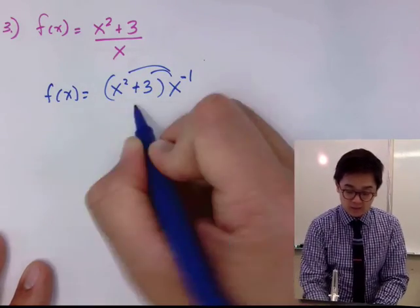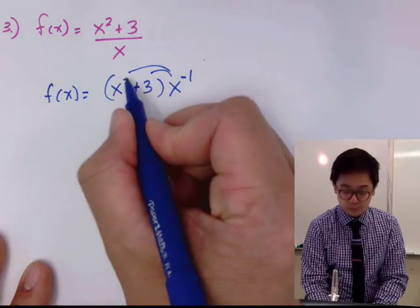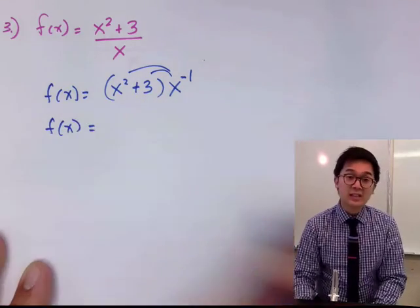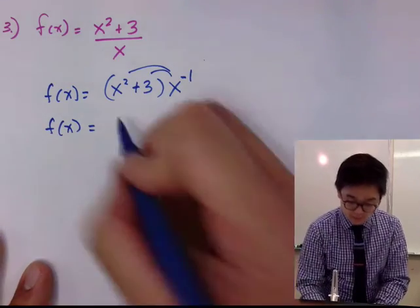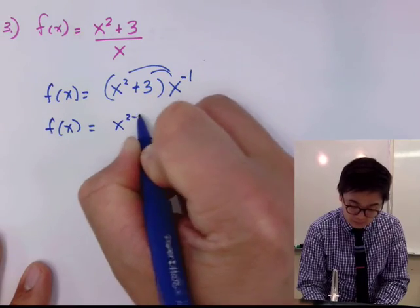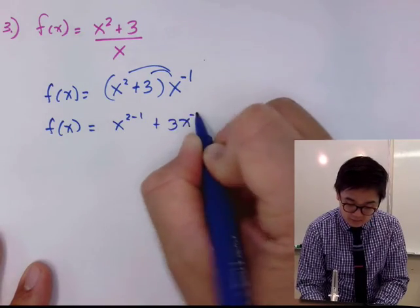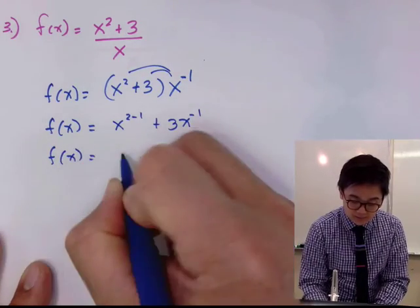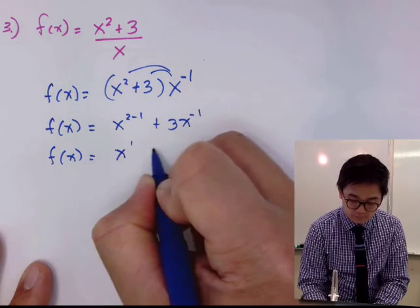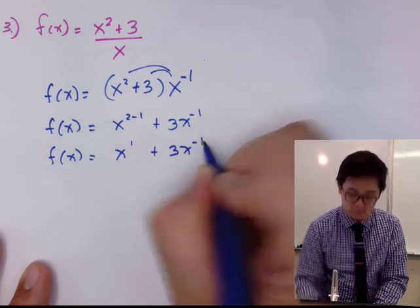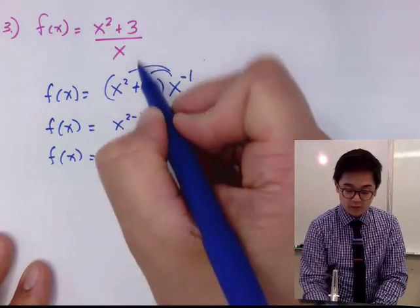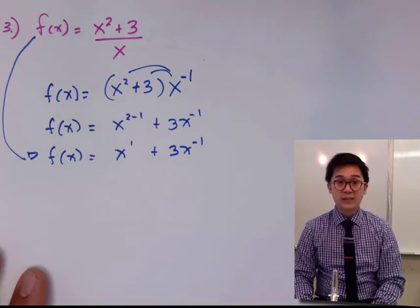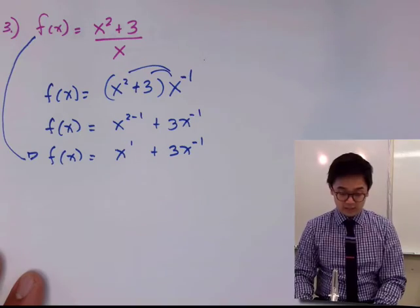By distributing x to the negative 1 into x squared plus 3, we add exponents when multiplying: x squared times x to the negative 1 is x to the 1, and 3 times x to the negative 1 is 3x to the negative 1. So f(x) becomes x to the 1 plus 3x to the negative 1, and now we can easily apply the power rule.